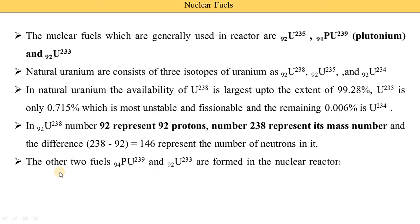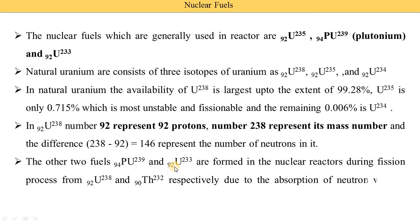The other two fuels — 94 Pu-239 and 92 Uranium-233 — are formed in the nuclear reactor during the fission process, meaning they are not naturally available. They are formed from 92 Uranium-238 and 90 Thorium-232 respectively, due to the absorption of neutrons without fission.